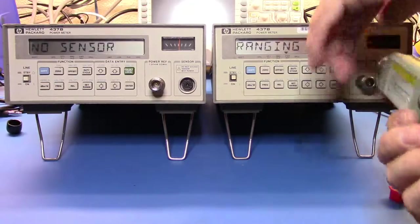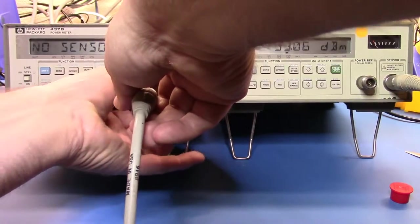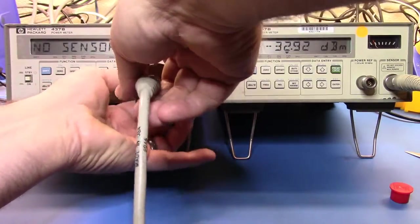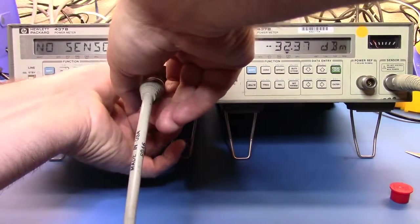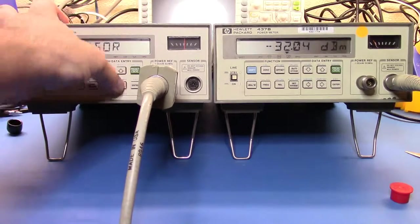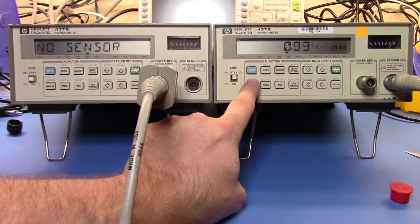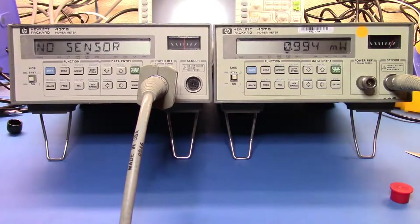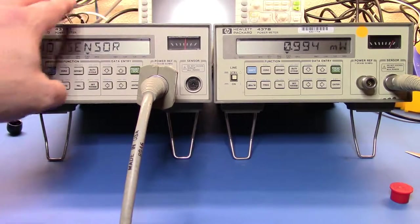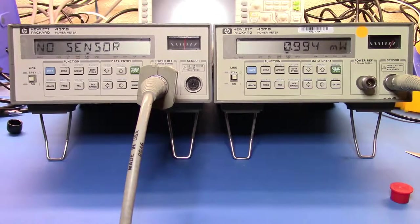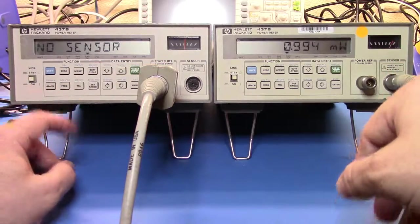Let's now put that over on the other device and see what we're getting out here. Okay, we're all good. Let's turn that power reference on. That's pretty good. You know, it's 0.994 milliwatts. We'll need to tweak that down a little bit to get it in there, but that's pretty good to start with.